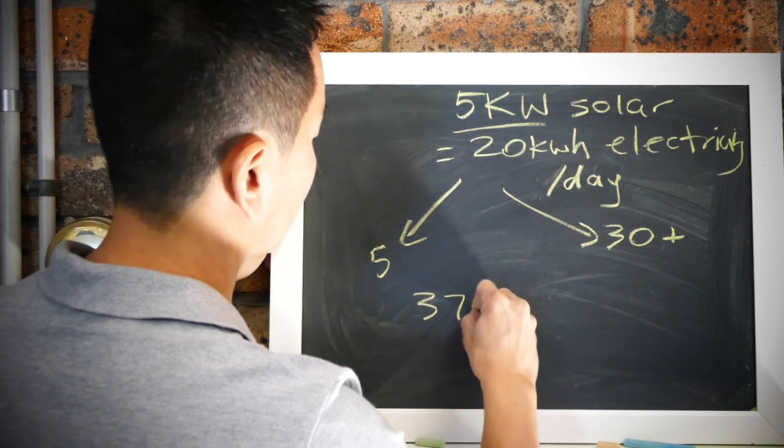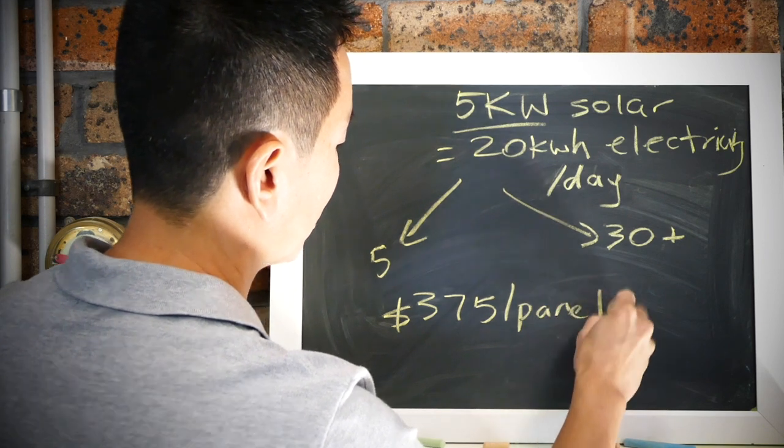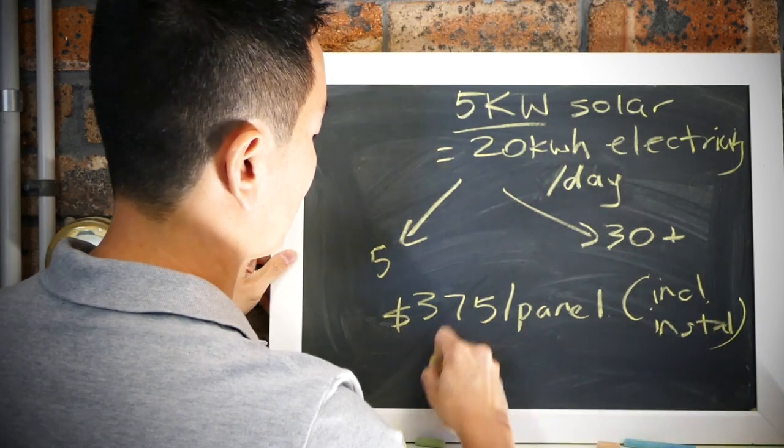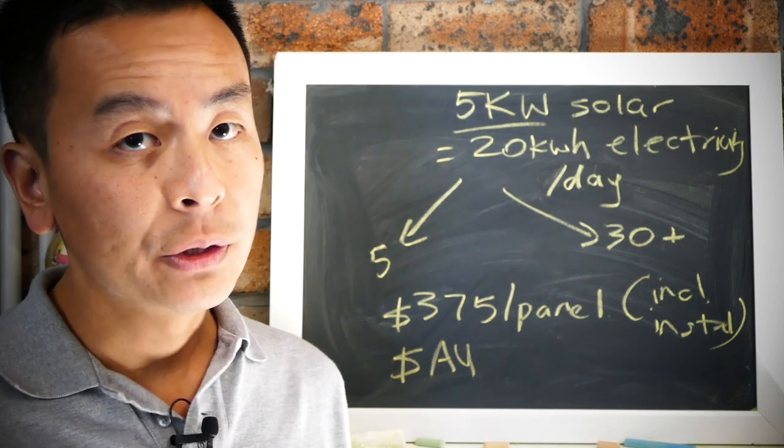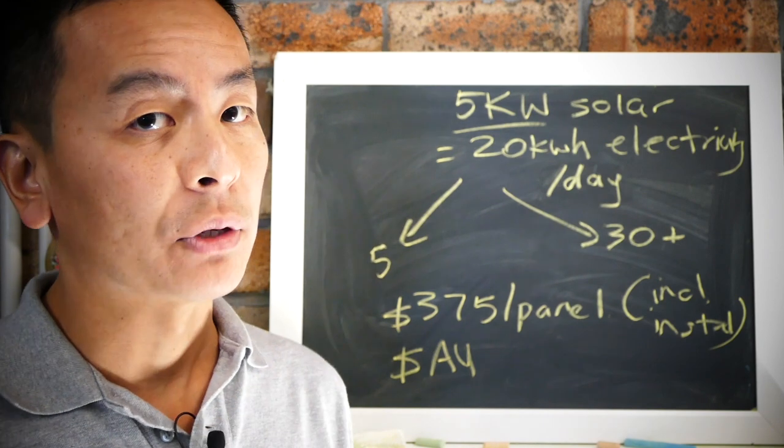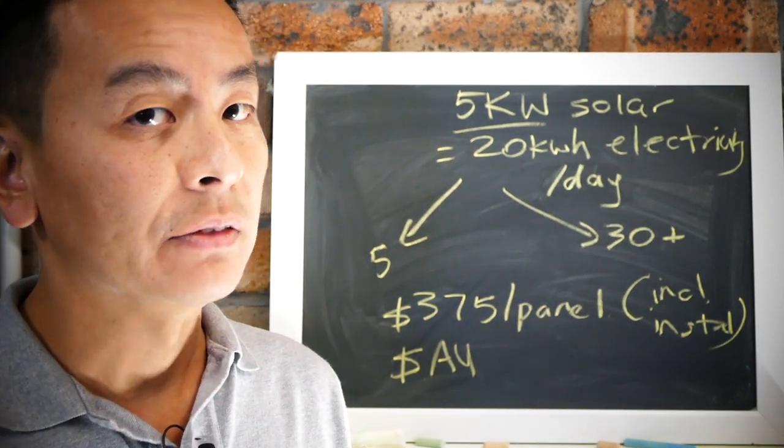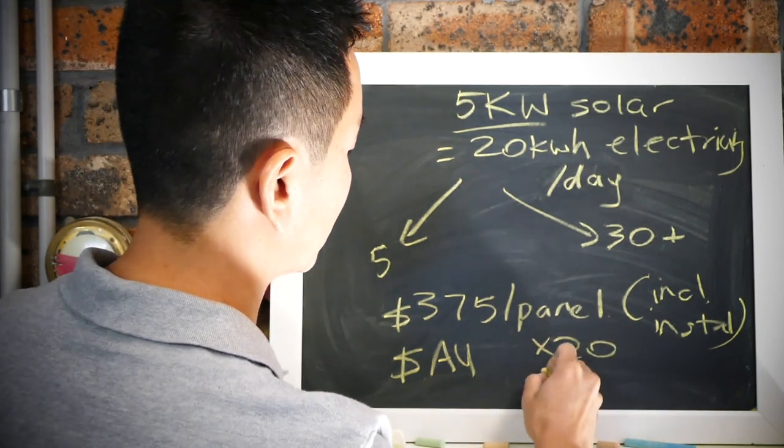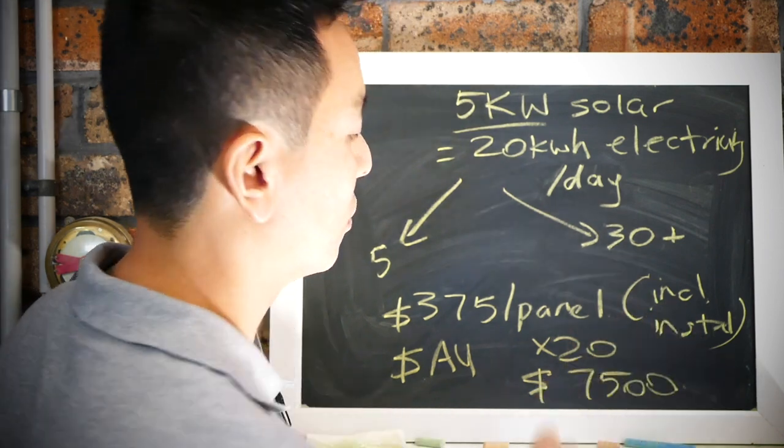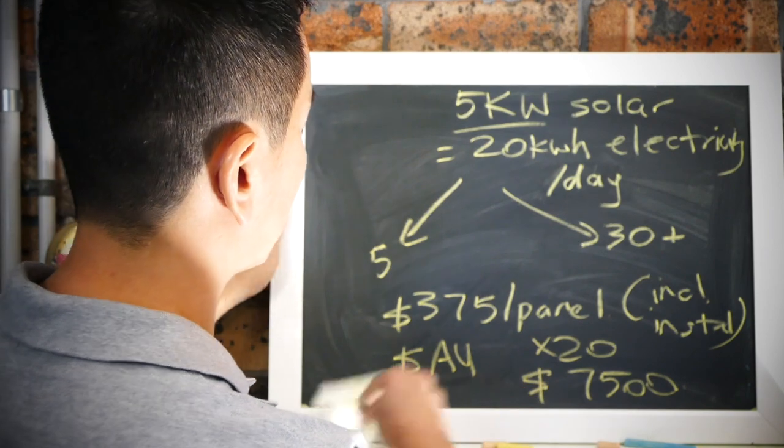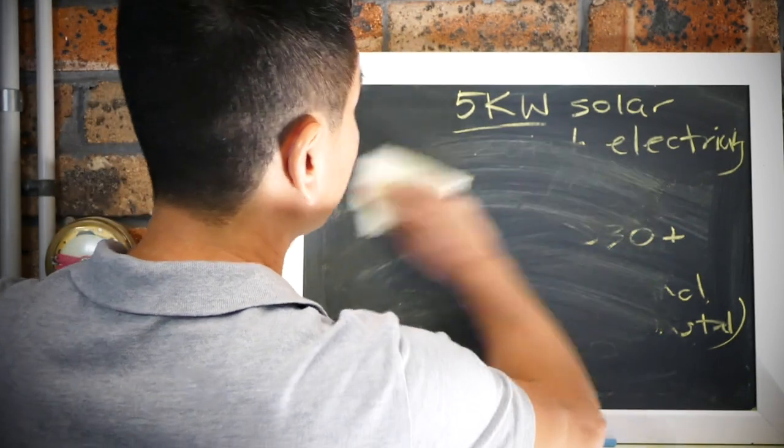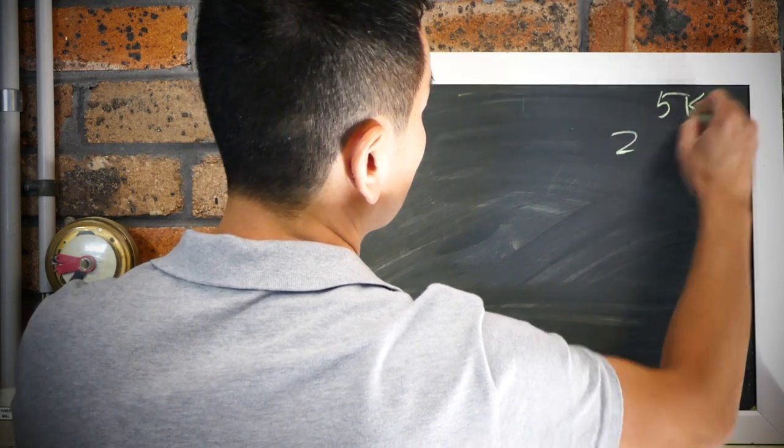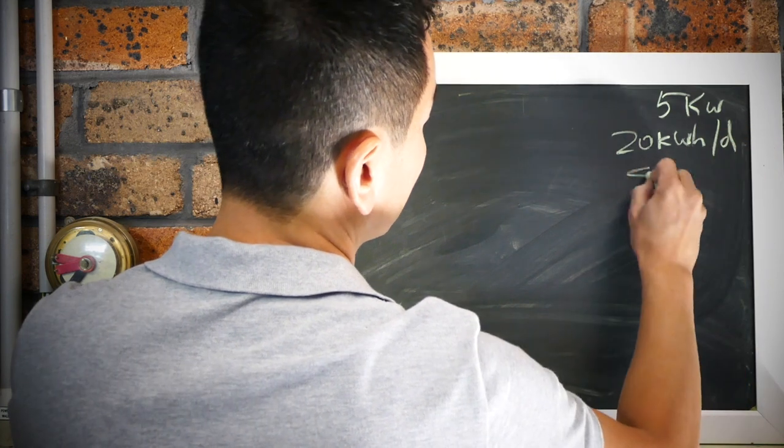A 5 kilowatt array is going to cost you $375 per panel based on recent quotes that I've gotten. This includes installation, don't forget these are in Australian dollars. It doesn't include the inverter. I know inverters are variable in their price, so I didn't include that in my calculations. $375 per panel, each panel is 250 watts, so you're going to need 20 panels which is going to cost you $7,500 all up including installation here in New South Wales. Let's keep those figures in mind. I'm going to put that up here in the top as well just to remind you, so 5 kilowatt solar, 20 kilowatt hours per day, it's going to cost you $7,500.